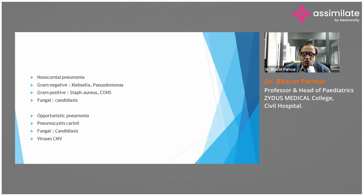The second group is nosocomial pneumonia. In nosocomial pneumonia, the etiology includes gram-negative organisms such as Klebsiella and Pseudomonas, gram-positive organisms such as Staphylococcus aureus and coagulase-negative staphylococci, and fungal organisms such as Candidiasis. The third group is opportunistic pneumonia, which includes Pneumocystis carinii, fungal Candidiasis, and the virus cytomegalovirus.